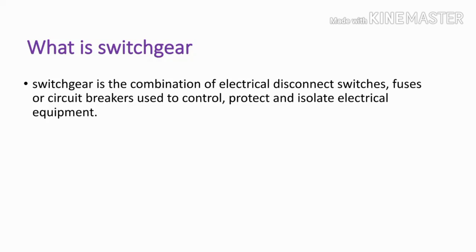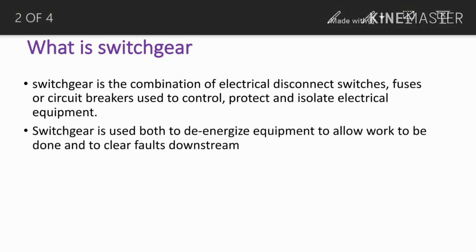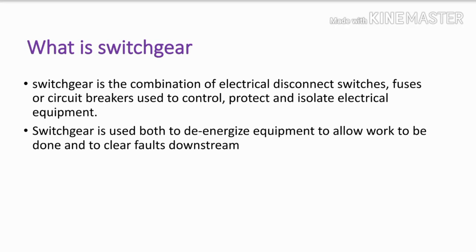For higher voltage, high insulation is required to safely control that voltage on and off — that is the purpose of switchgear. Switchgear is used to de-energize equipment to allow work to be done and to clear faults downstream. With the help of switchgear we can easily energize and de-energize equipment — simply put, turn it on and off.